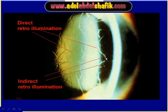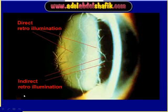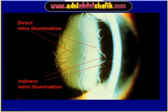You can also notice that we can see some lines against darkness — this is indirect retro illumination. So if you examine against the light it is direct retro illumination; if you examine the lesion against black, this is indirect retro illumination.